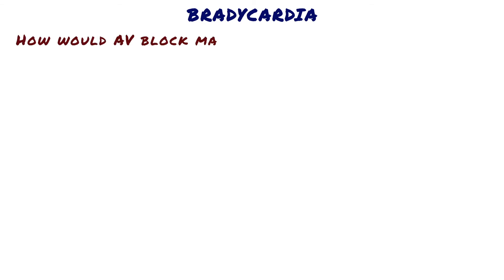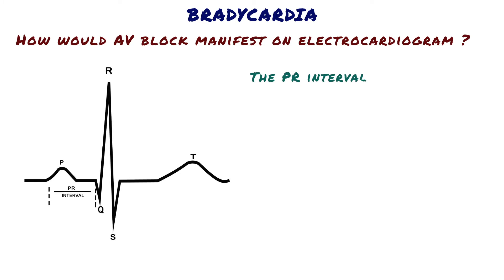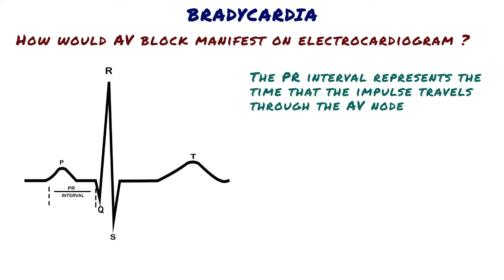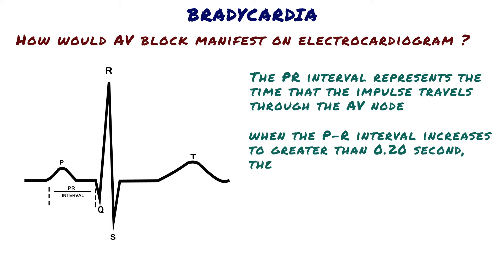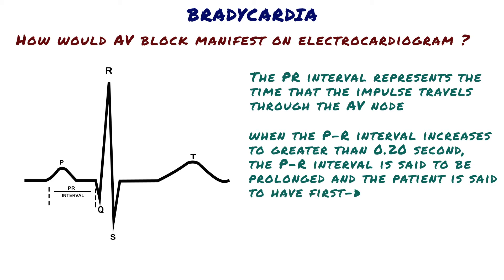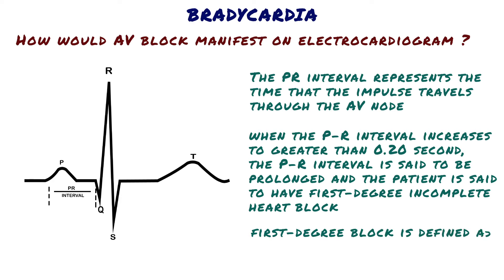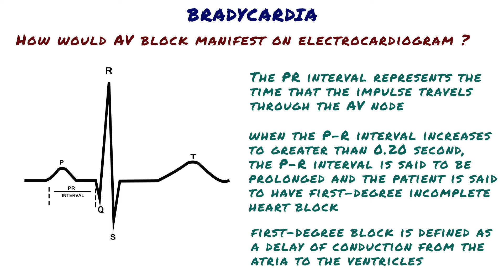How would AV block manifest on electrocardiogram? The PR interval represents the time that the impulse travels through the AV node. The PR interval usually decreases in length with faster heartbeat and increases with slower heartbeat. In general, when the PR interval increases to greater than 0.20 seconds, the PR interval is said to be prolonged, and the patient is said to have first degree incomplete heart block. Thus, first degree block is defined as a delay of conduction from the atria to the ventricles, but not actual blockage of conduction.